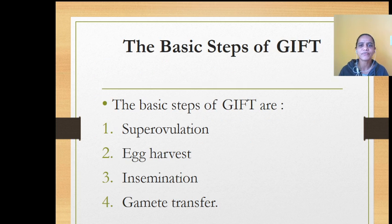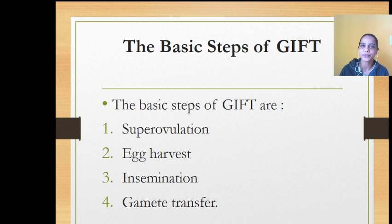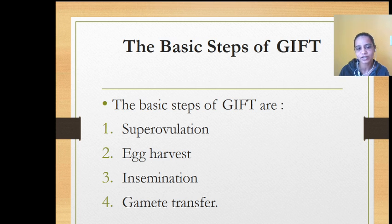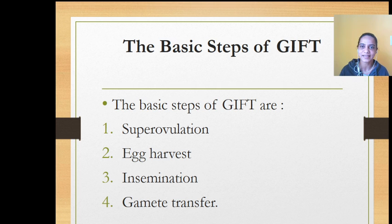What are the different steps of GIFT? The basic steps are: first, super ovulation; second, egg harvest; third, insemination; and fourth, gamete transfer. If you recall the steps involved in in vitro fertilization, you will see similar steps in GIFT as well.